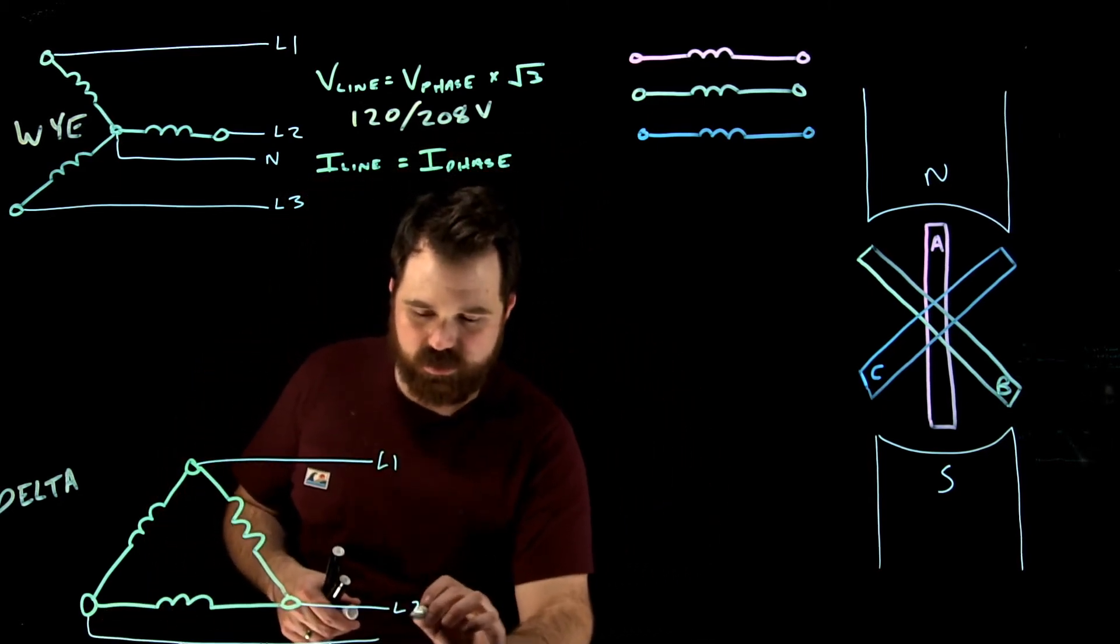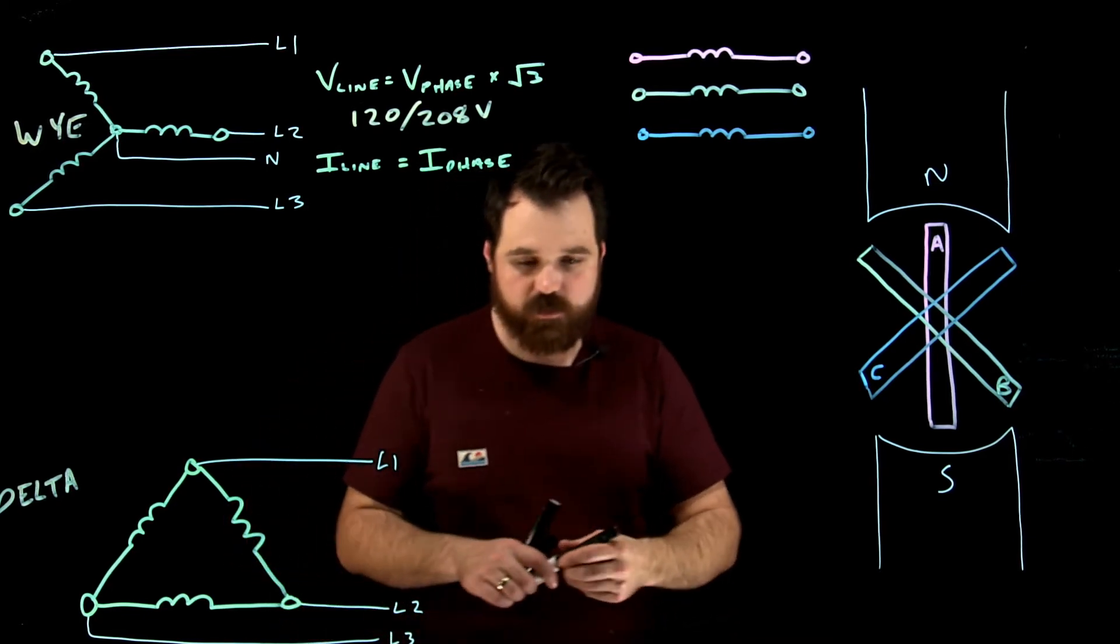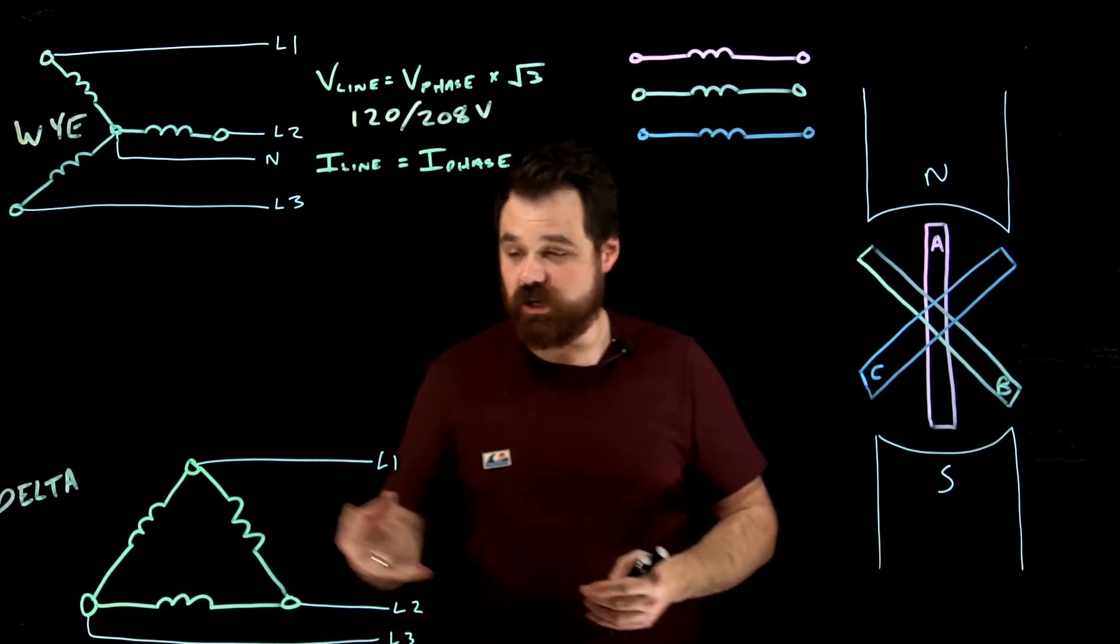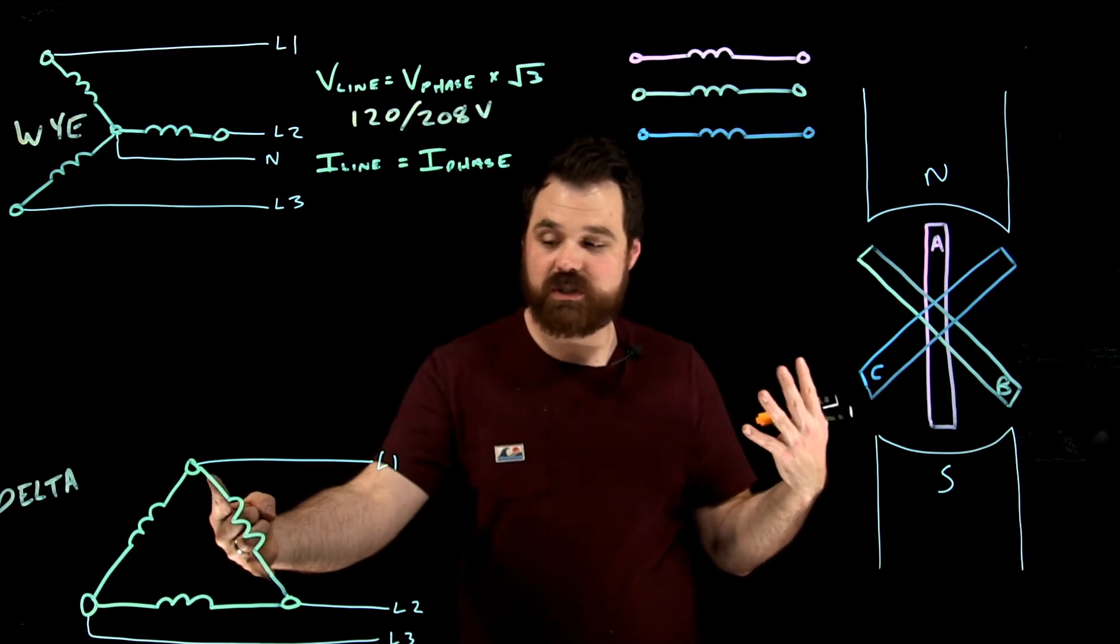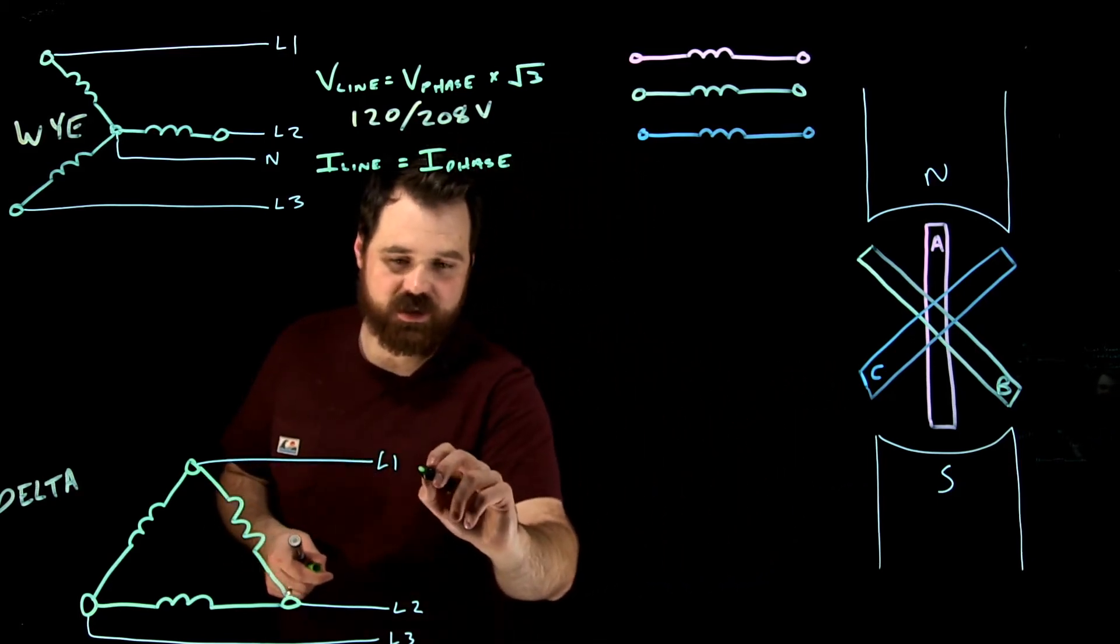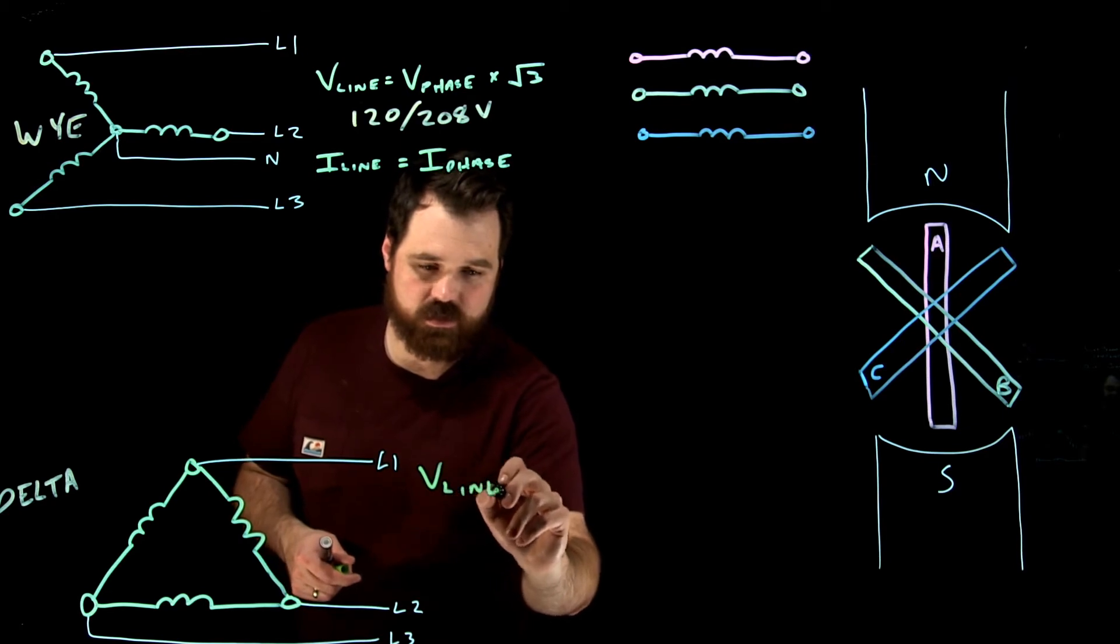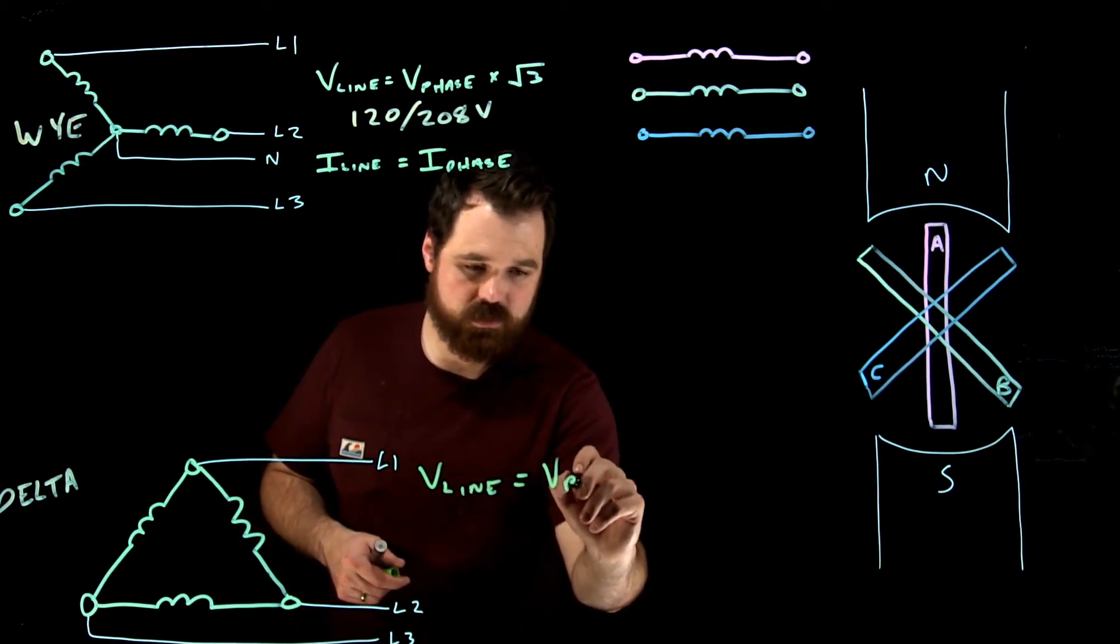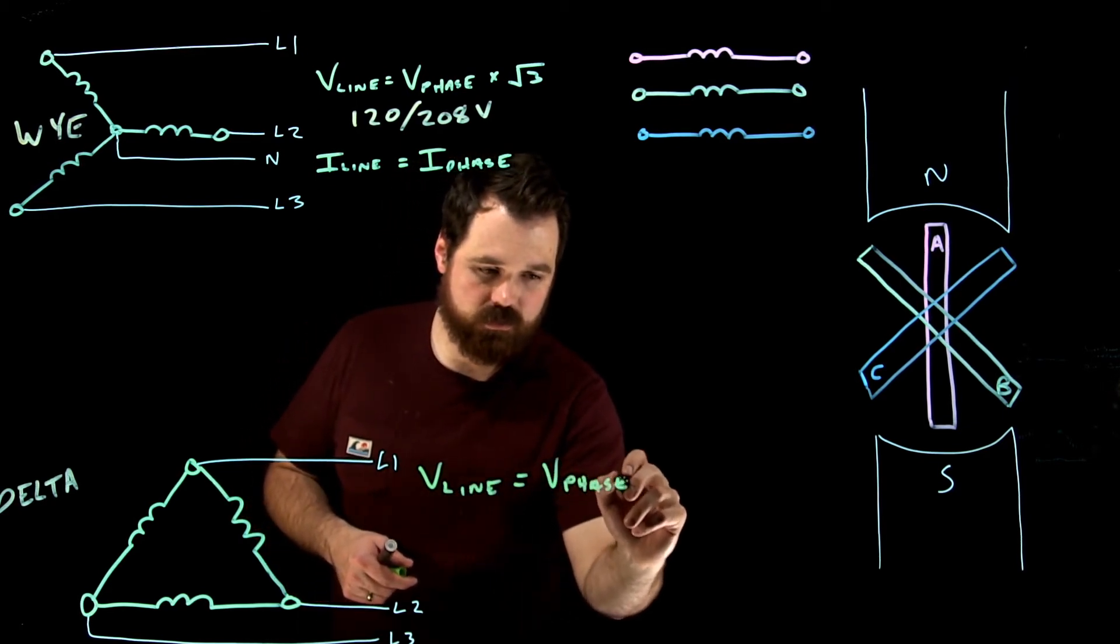So this would be line one, line two, line three. So we don't have multiple voltage here. Our phase 120 volts is our line to line voltage. So what we see in delta is V line equals V phase.